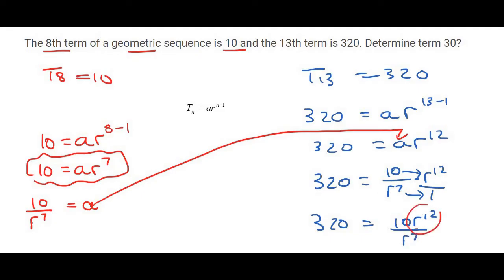Now, R12 over R7 becomes R5. You can then divide by 10, and so you'll end up with 32 is equal to R to the power of 5. To get R, you would then take the fifth root on both sides. And so R would be equal to 2.